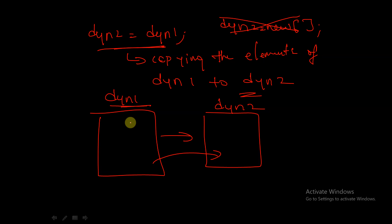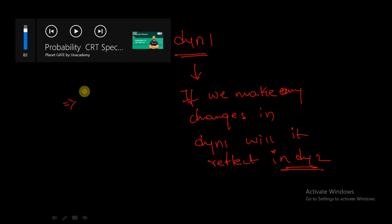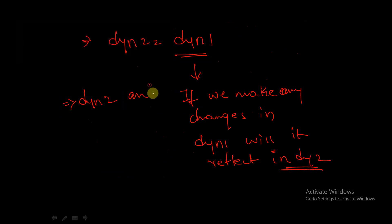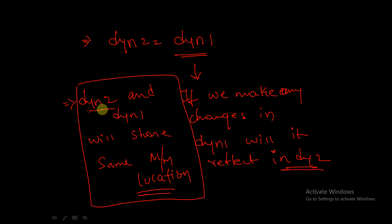Both dyn1 and dyn2 will be accessing from the same memory location. So both dyn2 and dyn1 share the same memory location. That's why if any changes are made in dyn1, they will get reflected in dyn2. In the next session we will start with the discussion of queues. That's all for this session.